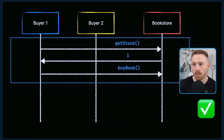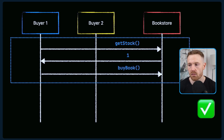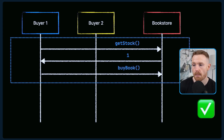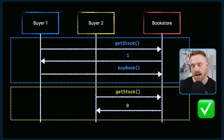Let's say buyer one was able to say 'hey bookstore, do you have my book in stock?' The bookstore would say 'yes, we have one,' and then that buyer buys the book straight away, reducing the bookstore stock to zero.